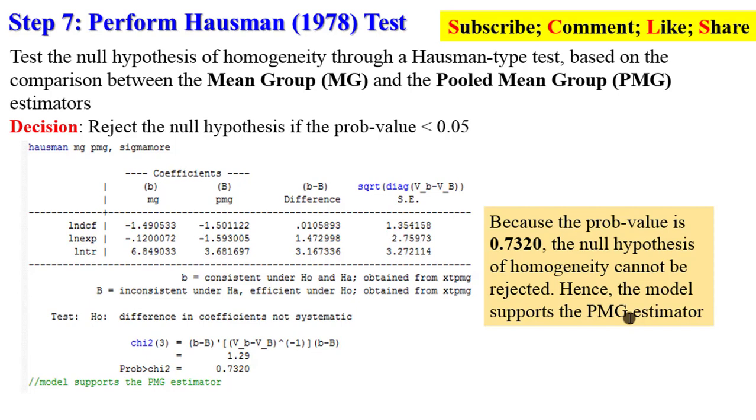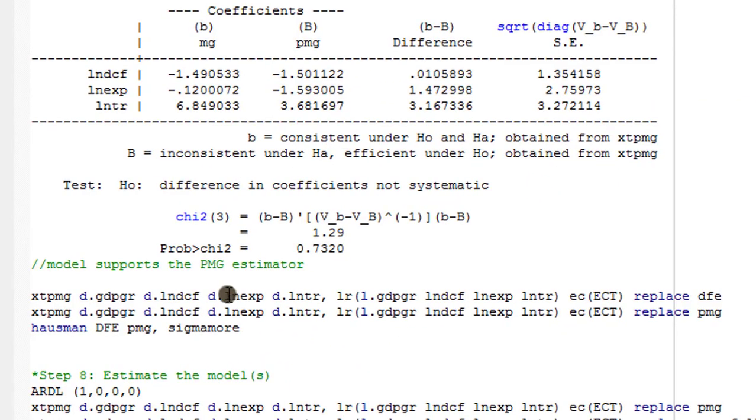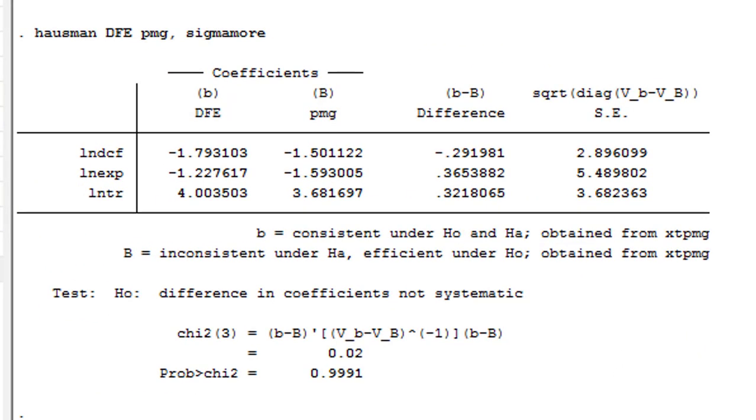But what if you want to decide between PMG and the dynamic fixed effects estimator? It's the same approach. Let's go back to Stata. This is the command you have to run: you have the DFE here, the PMG, and the Hausman test. Highlight both plus the Hausman test and let's run it.